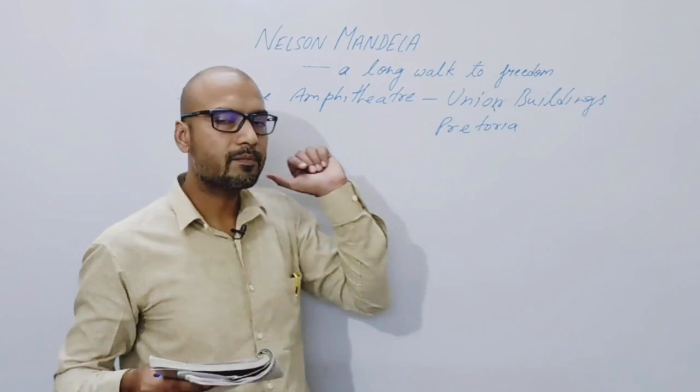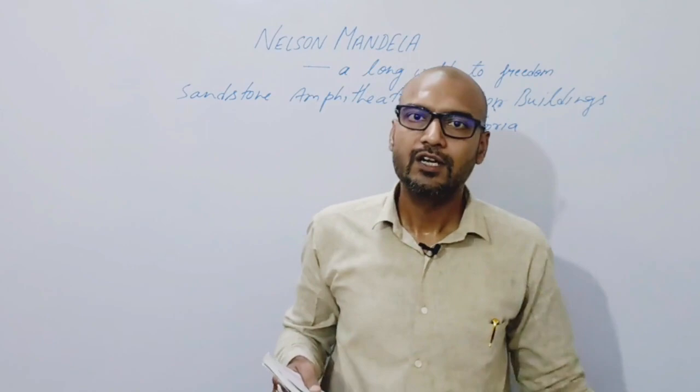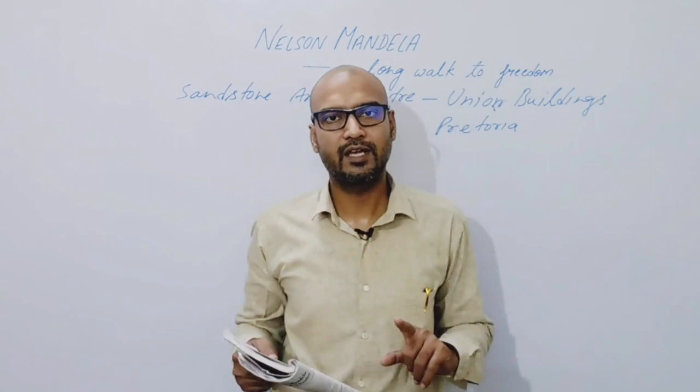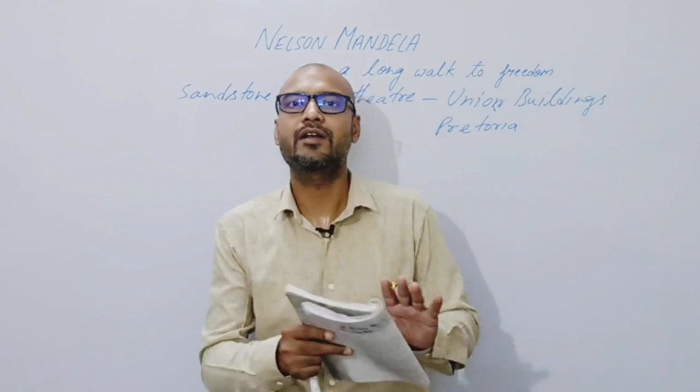Is din ko unhone 'autumn day' bola hai. Autumn ka matlab hota hai patjhad — matlab ki purani leaves chali jaati hain aur kuch time ke baad nayi leaves wahan par aati hain. Toh 10th May ka comparison autumn day se kiya hai. Two marks ke questions aate hain ki why is 10th May being compared to an autumn day — kyunki autumn day mein purani pattiyaan khatam hoti hain aur nayi aati hain, waise hi 10th May ko purane rules khatam hue aur new rules aane wale hain.